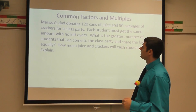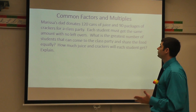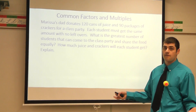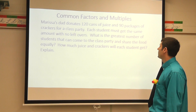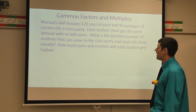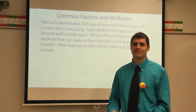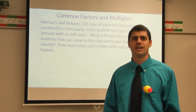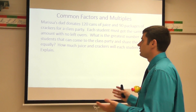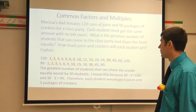Marissa's dad donates 120 cans of juice and 90 packages of crackers for a class party. Each student must get the same amount with no leftovers — we want to make sure it's fair for everybody. What is the greatest number of students that can come to the class party and share the food equally? How much juice and crackers will each student get? Let's think about what we can use — common multiples, common factors — to figure out how to divide up these crackers and juice.